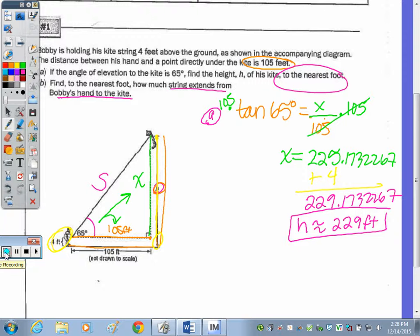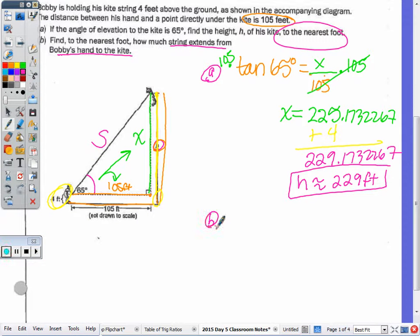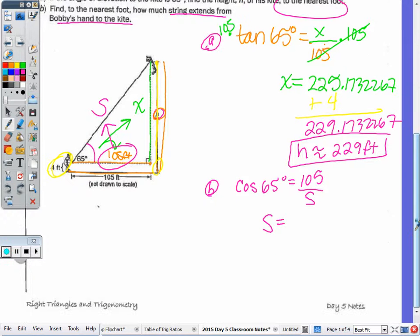Part B. Finding the nearest foot, how much string? Again, that's our S. What's the ratio I want to use to find the amount of string? And again, you should really avoid using the value you found for X. So what can we use to find out for the ratio? Kylie? Cosine. So the cosine of 65 degrees is adjacent over hypotenuse. So 105 divided by S. S is equal to 105 divided by the cosine of 65 degrees. So S is going to be approximately, so S is approximately 248 feet.